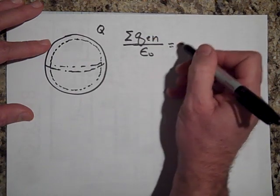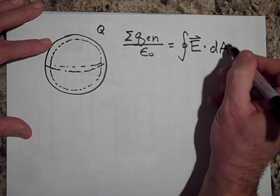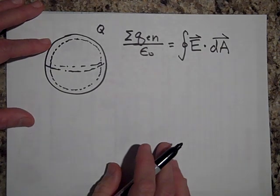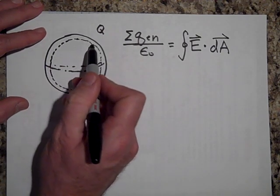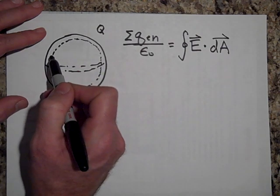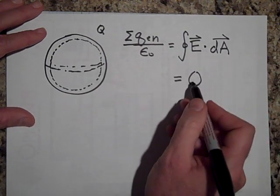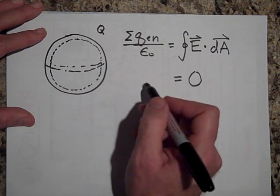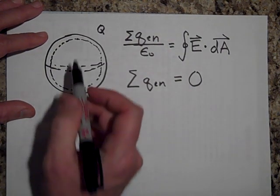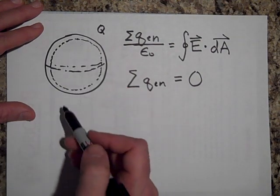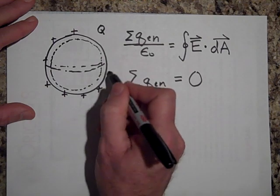The net charge enclosed over epsilon-naught equals the closed surface integral of E dot dA. If there's no E at the surface, there's no flux going through. If E is zero, the whole integral turns into zero, so the net charge enclosed must equal zero. So all the charge inside that Gaussian surface is zero — meaning the charge is hanging out right on the surface.